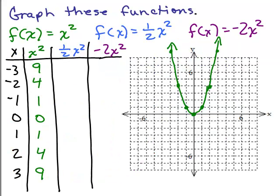We are going to begin by graphing three functions on the same set of axes: f of x equals x squared, which we've done in previous videos — that's your y equals x squared, your basic parabola. And also f of x equals one half x squared and f of x equals negative 2x squared. I've done a little chart here with our normal seven values for x and what x squared is.